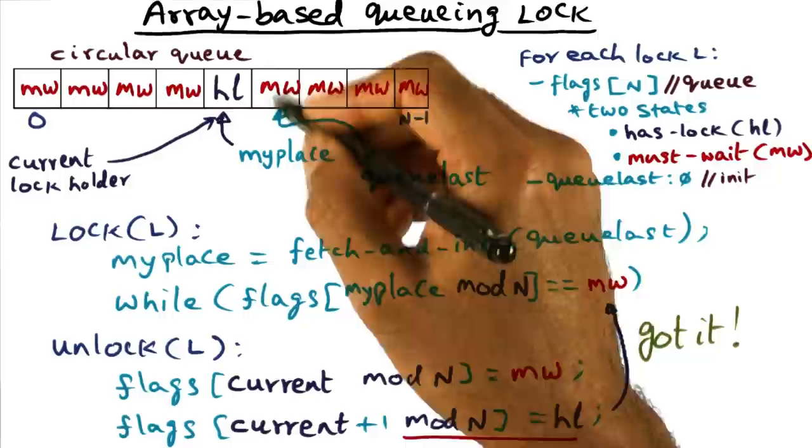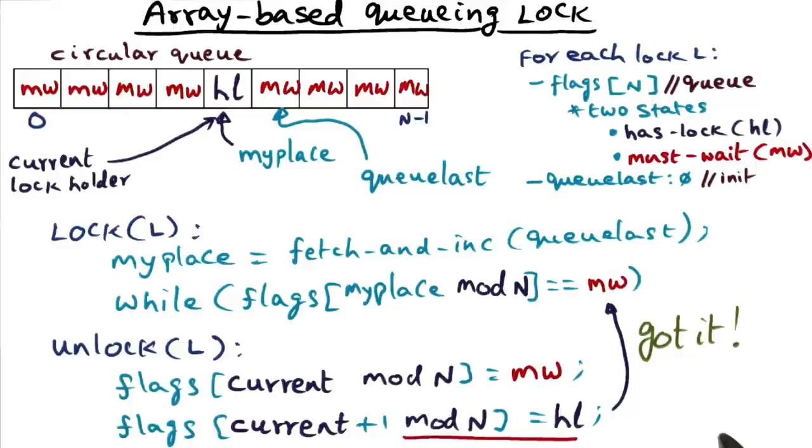And now I can go off into the critical section, do what I need to do in order to do the code that is associated with the critical section protected by this particular lock L.